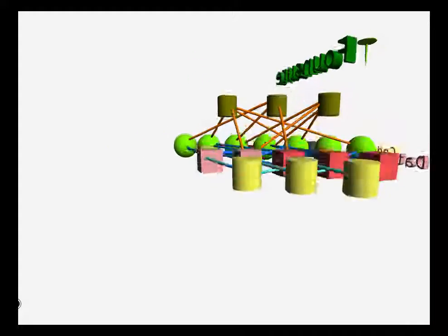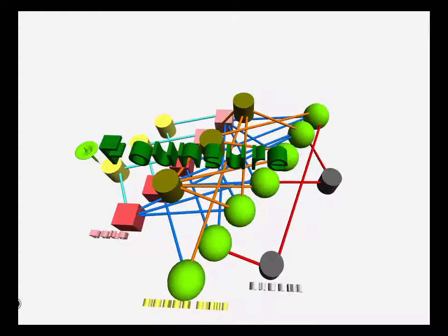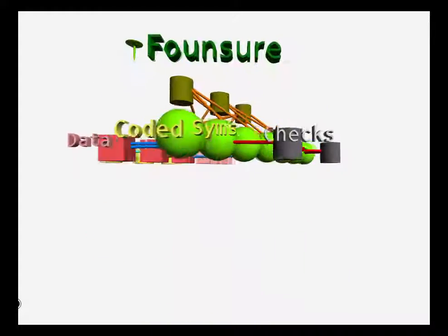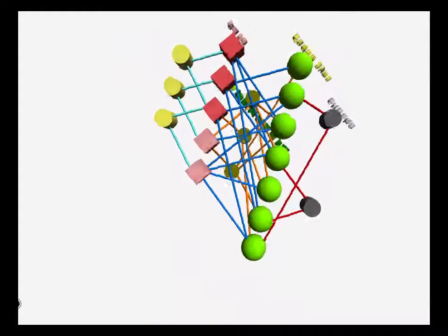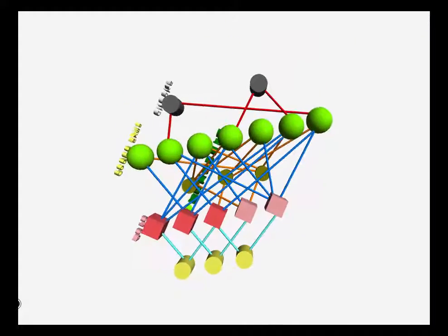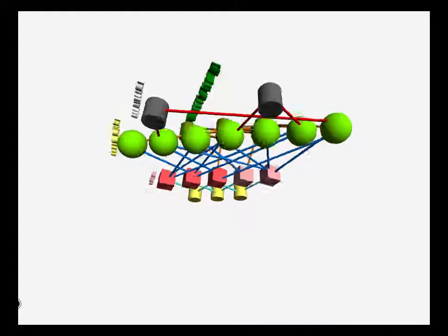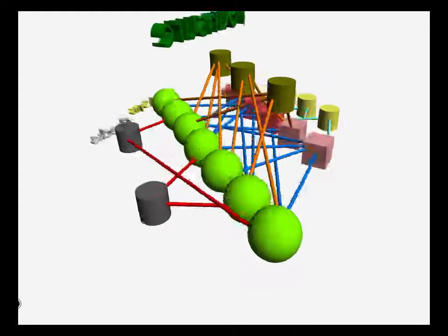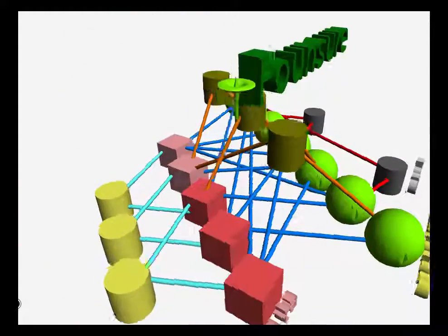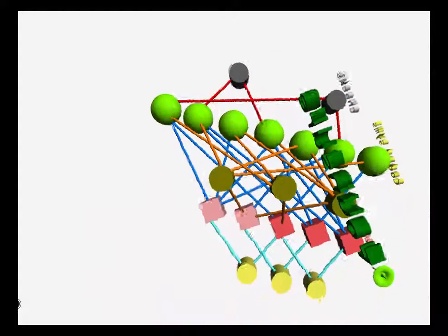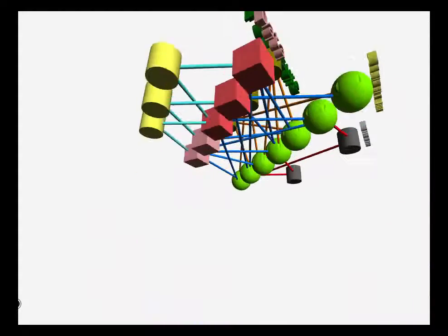Farnsure is a brand new erasure coding library based on graph codes, and its implementation is based on 3D bipartite graphs as shown with this 3D simulation. There are data blocks, which are shown in red, there are coded blocks, which are shown in green, and on top of that, there are 3 different types of check nodes oriented in 3D space for error checking, decoding, and for other reasons.